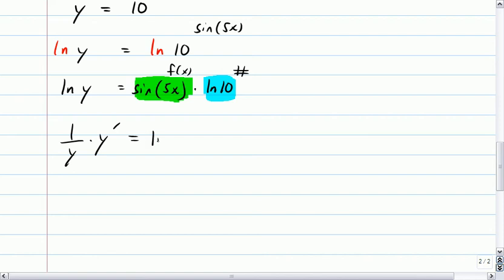is your number times the derivative of your function. So the natural log of 10 just kind of gets to go along for the ride there. So the derivative of the sine of 5x, let's see. I'm going to work from the outside in. So the derivative of the sine is cosine. The next inner function is 5x. Its derivative is 5.